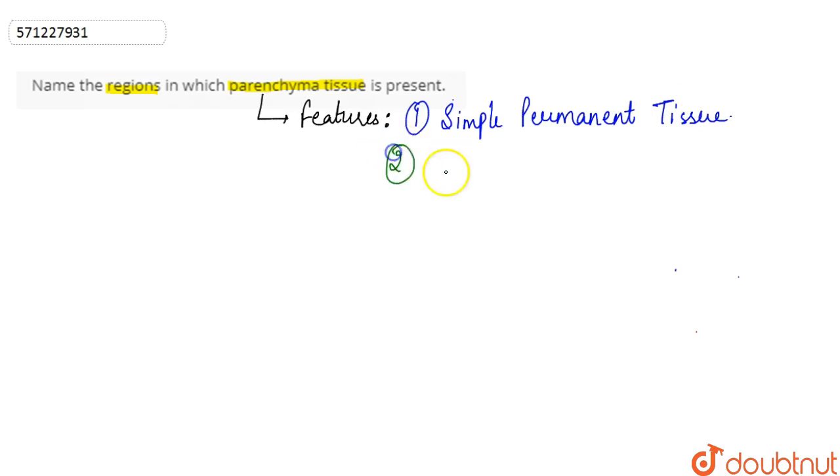The second feature that we have here is that the parenchyma tissue is composed of living, undifferentiated cells.